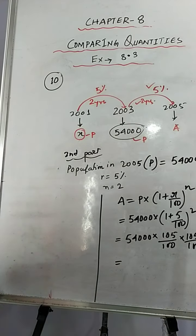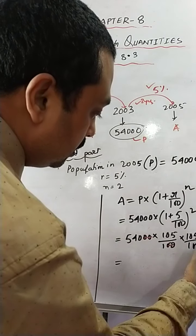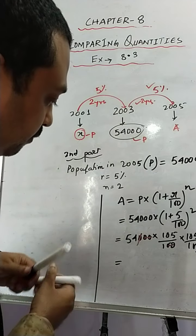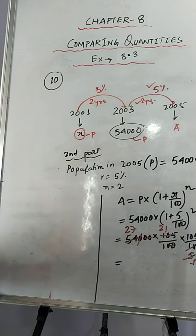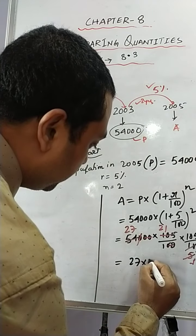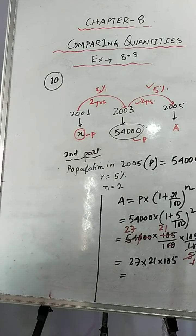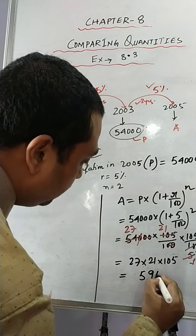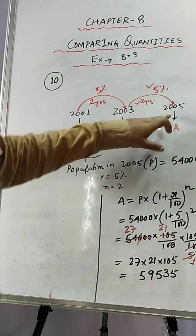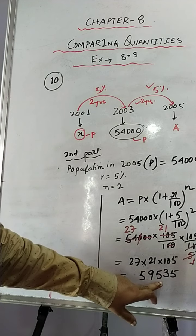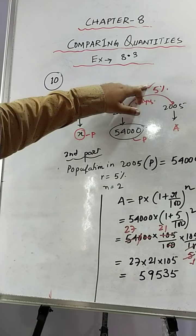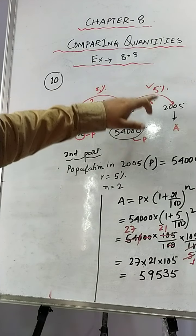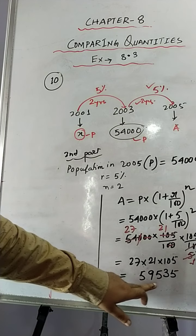Once you solve this, reduce two zeros from 100 and 54,000 to get 540, then reduce with 2 to get 27, reduce 105 with 5 to get 21. Multiply 27 × 21 × 105 to get the answer: 59,535. So in the year 2005, the population will increase to 59,535. In 2003 it was 54,000, and after 2 years at 5% per year, the population in 2005 will be 59,535.